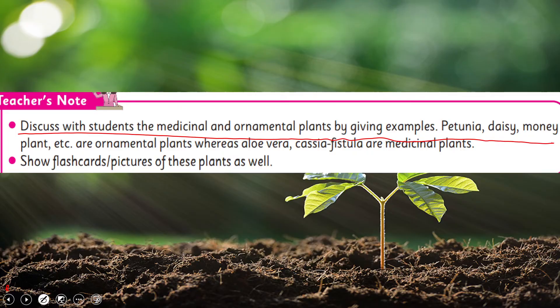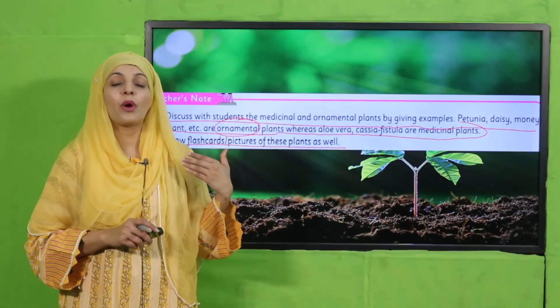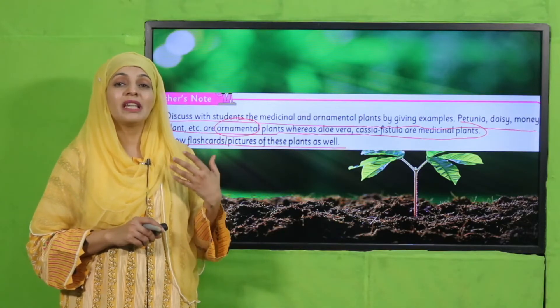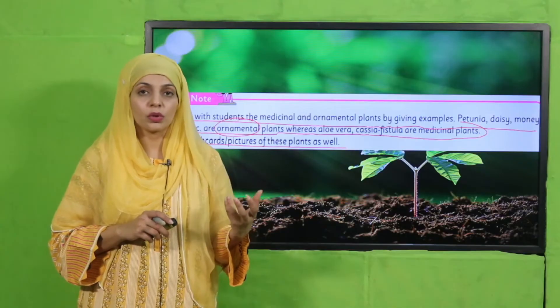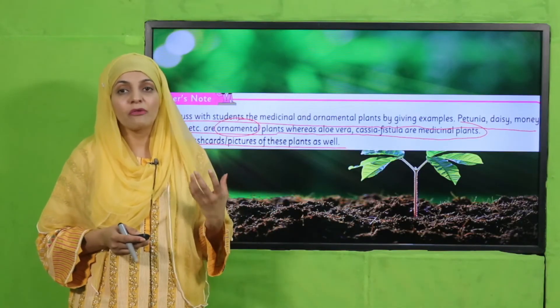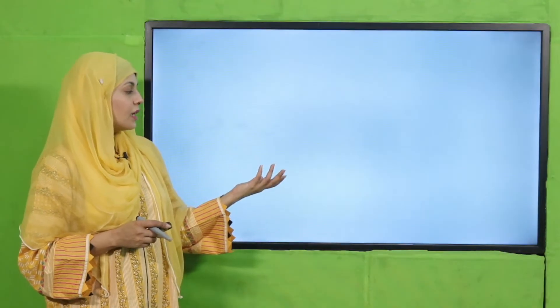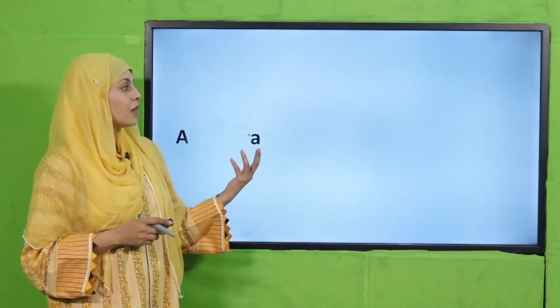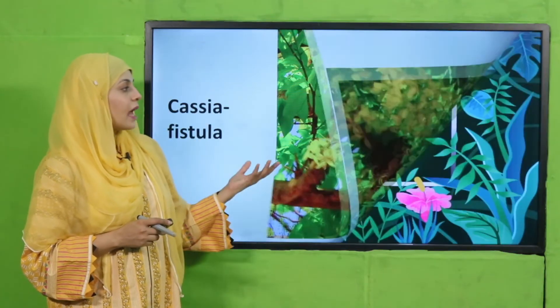Another teacher's note: discuss with students the medical and ornamental plants by giving examples. Petunia, daisy, and money plant are ornamental — yani decorative plants. Whereas aloe vera and acacia are medical plants. In is lecture mein pehle maine aapko aloe vera dikhaya — iska medical purpose hai. Money plant ka ornamental purpose hai, yani decoration ke liye. Ornamental plants are daisies and petunia. Aloe vera and cassia fistula have medical purposes — inko medicine banane mein use kiya jata hai.